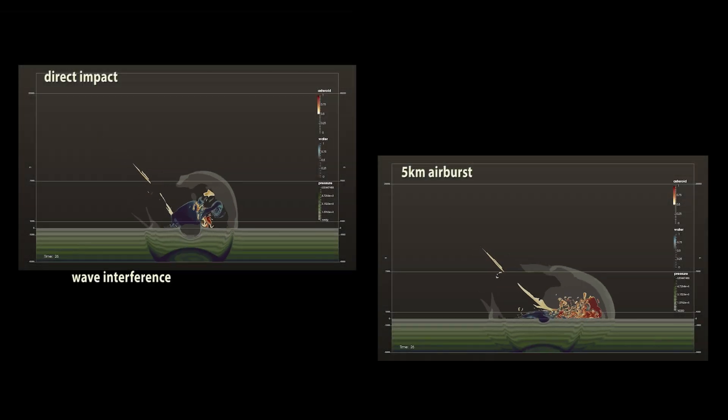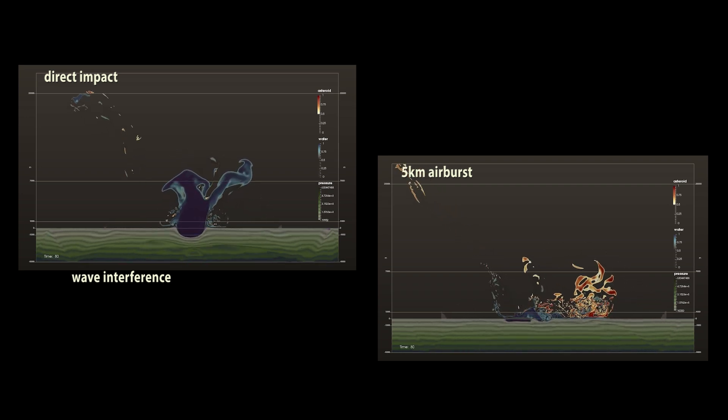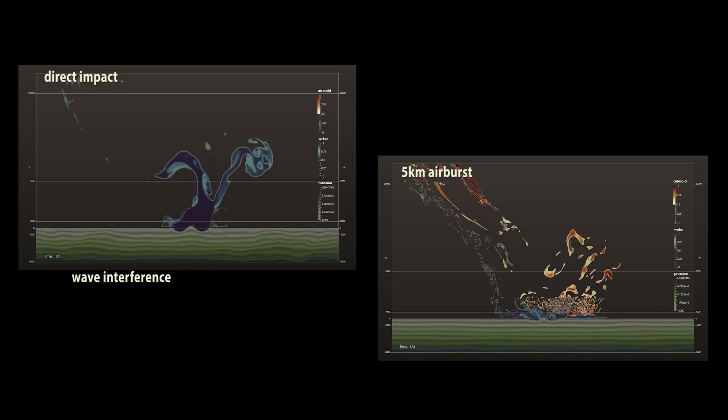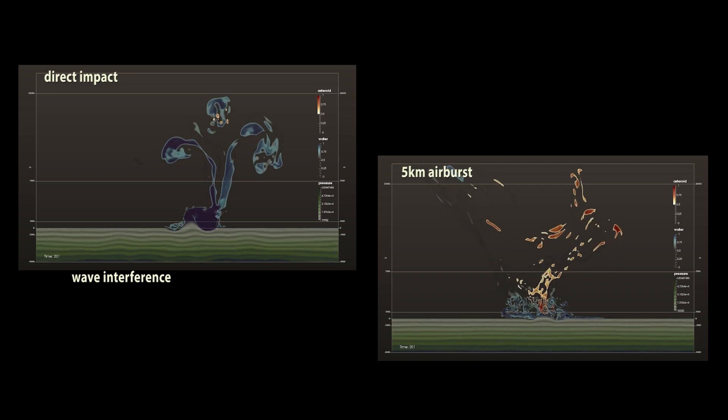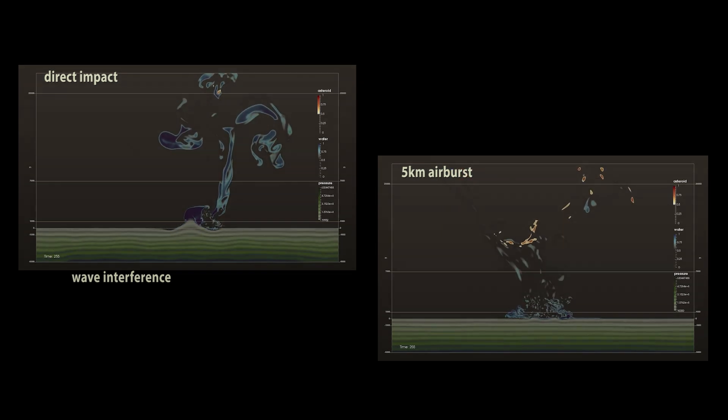Interestingly, there is a stronger wave interference in the direct impact simulation, but such an impact is more likely to create a tsunami because of the greater height of the splash. This may indicate that a tsunami is more likely to be formed during a direct impact than an airburst. Previous simulations had led us to believe that the opposite was true.